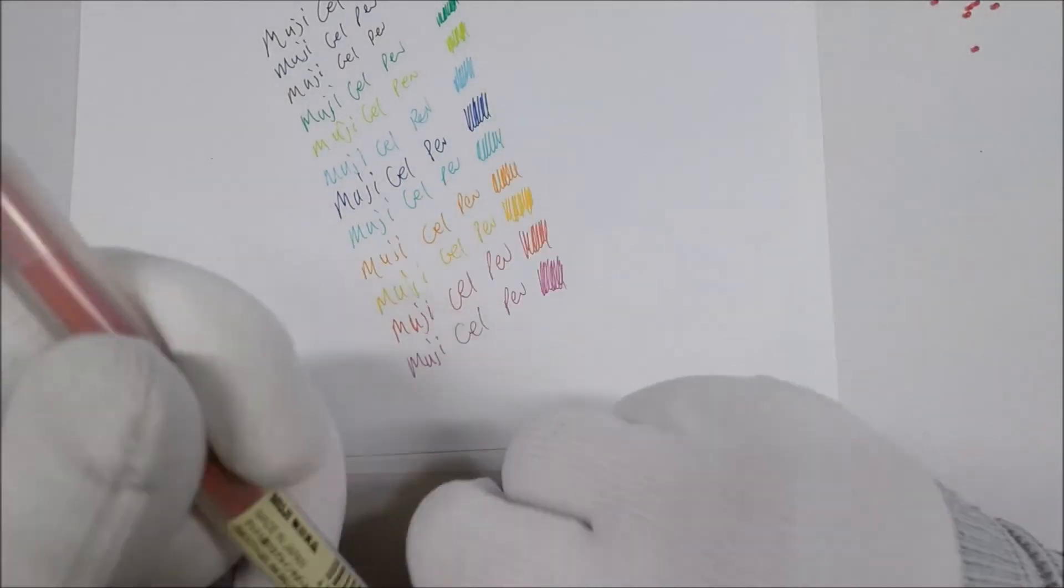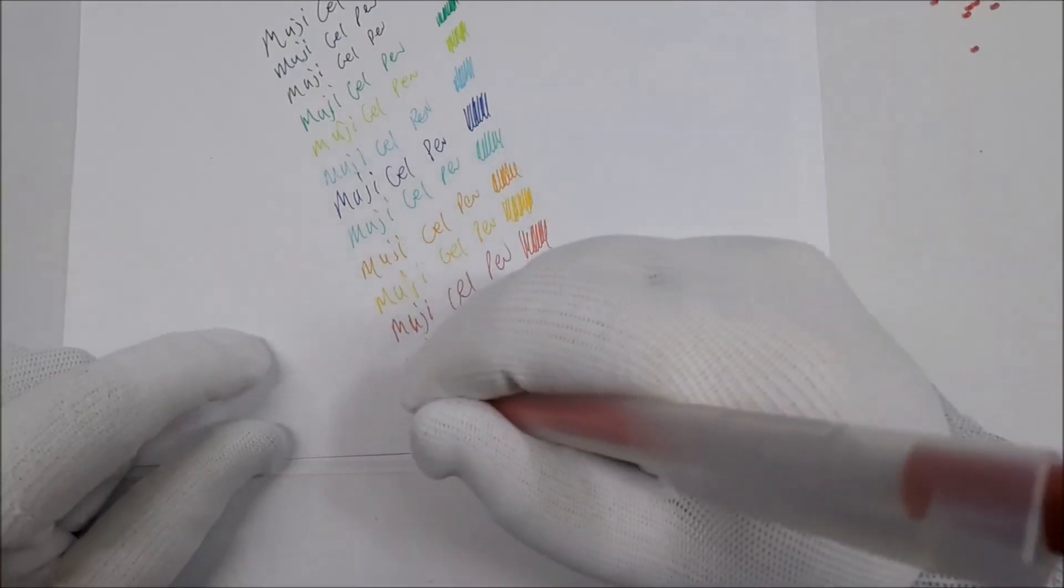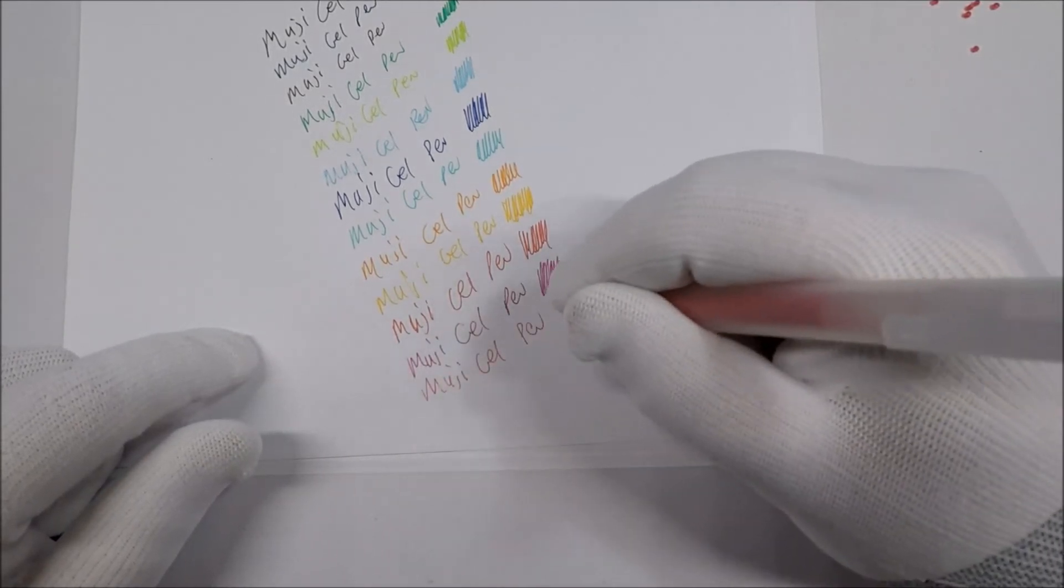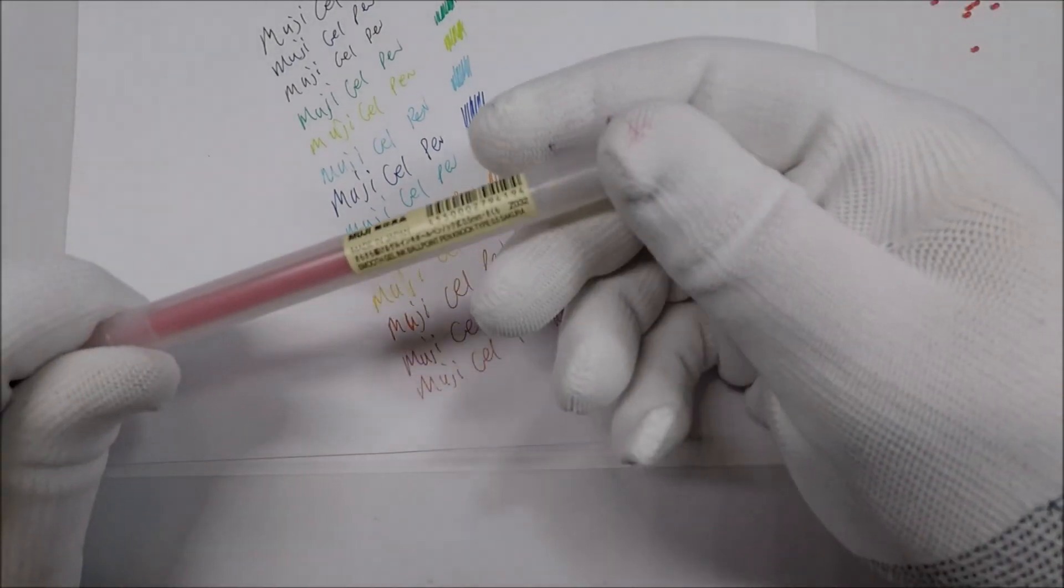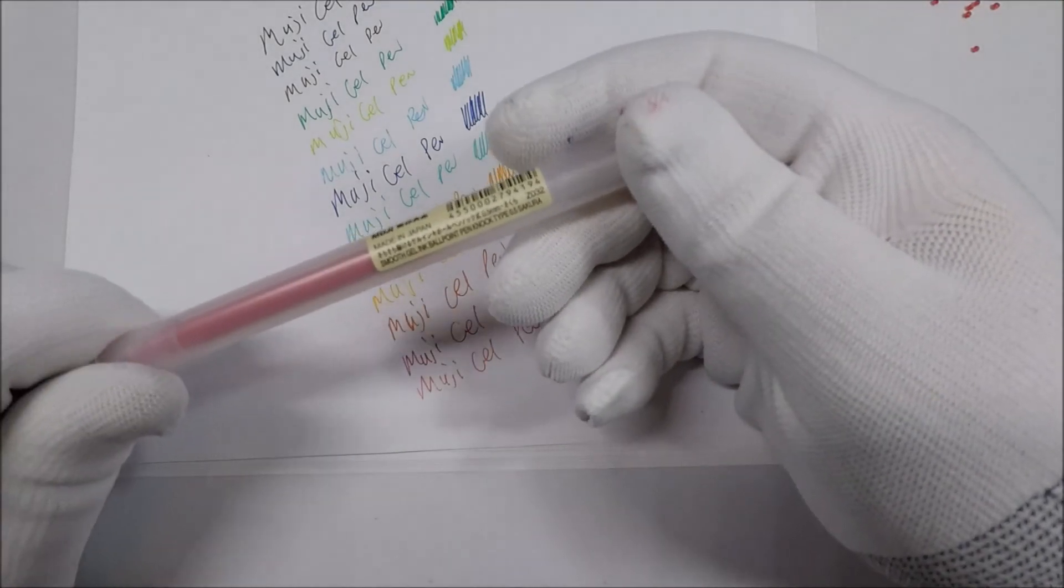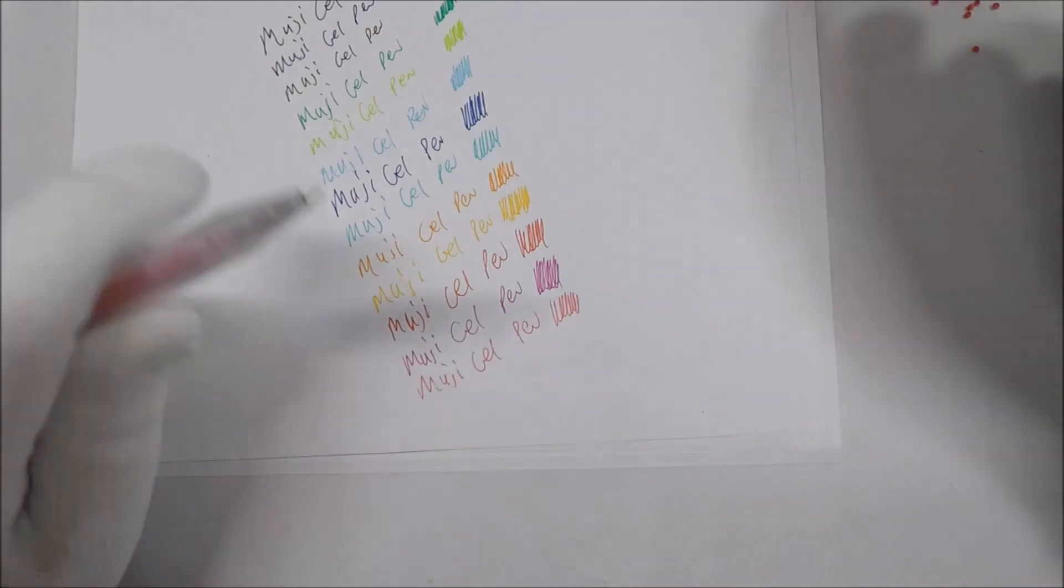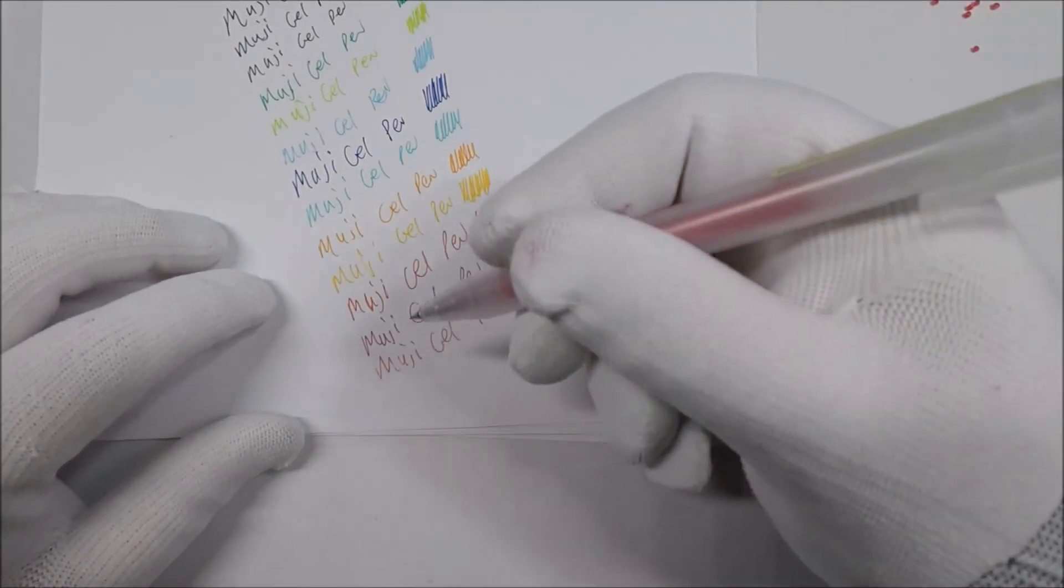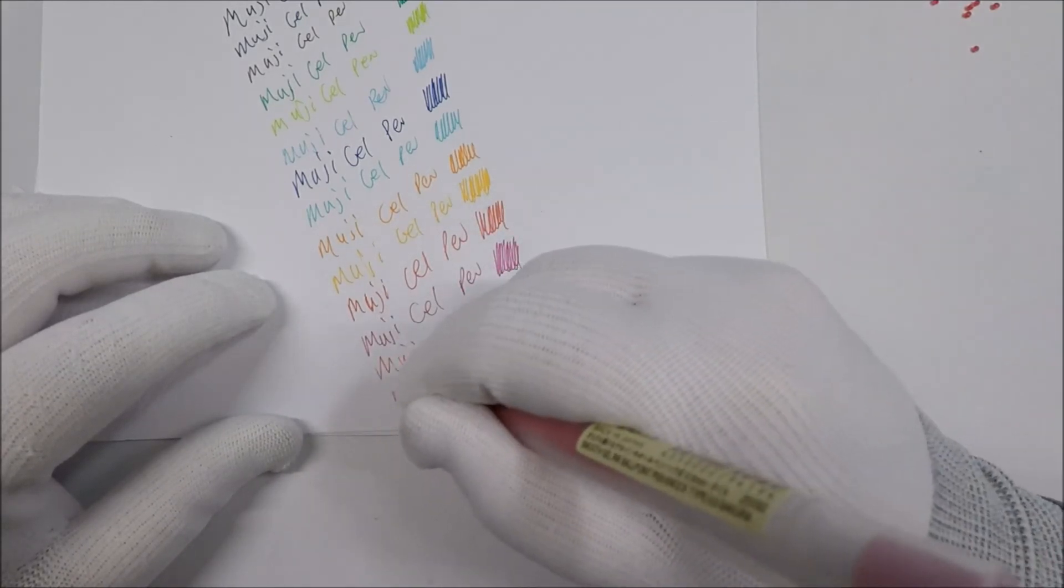And then we got pink. Muji gel pen. Pink's okay. So that one was pink and this is Sakura. According to my notes, Sakura is cherry blossom, so pink, maybe like neon pink. These two are very similar.